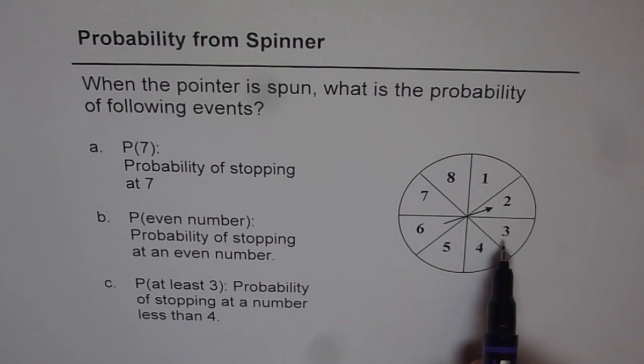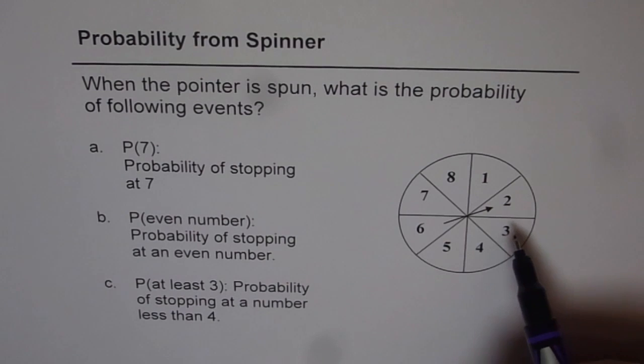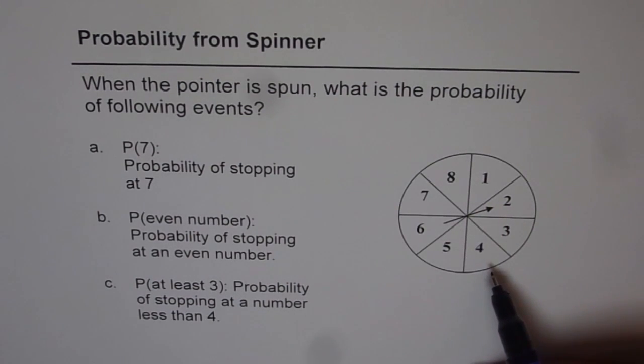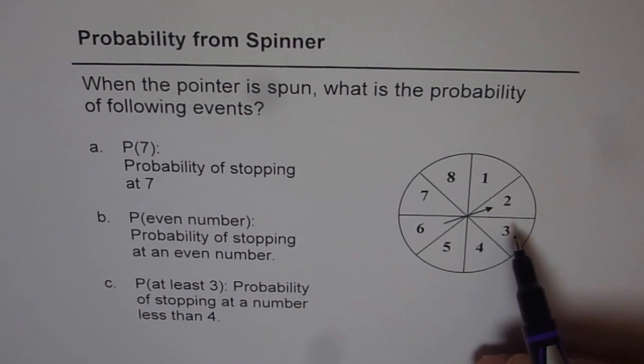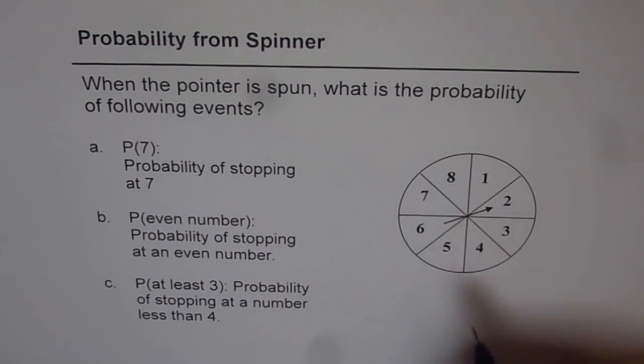So it could be 1, 2, or 3. Let's try to understand these questions and see how to answer them. Now in a spinning wheel, we have 8 equal parts. That means when you spin this pointer, it could stop at one of these places. So the total number of possible outcomes is 8.